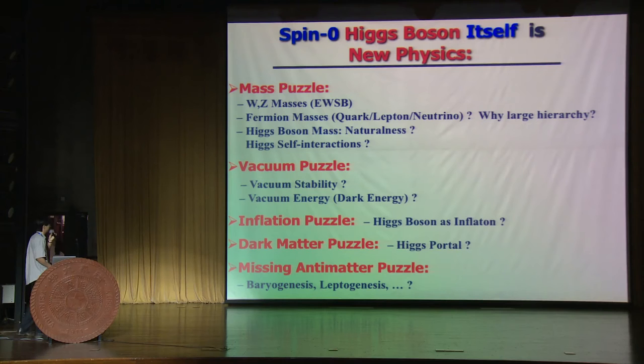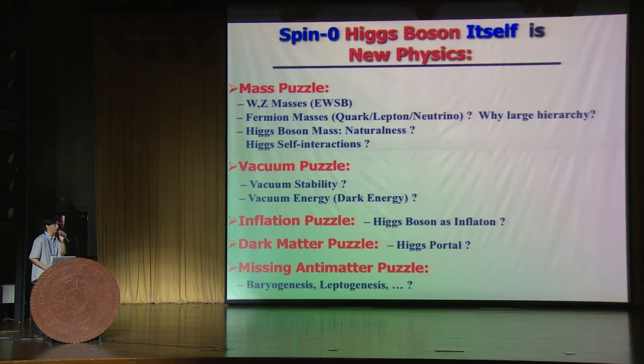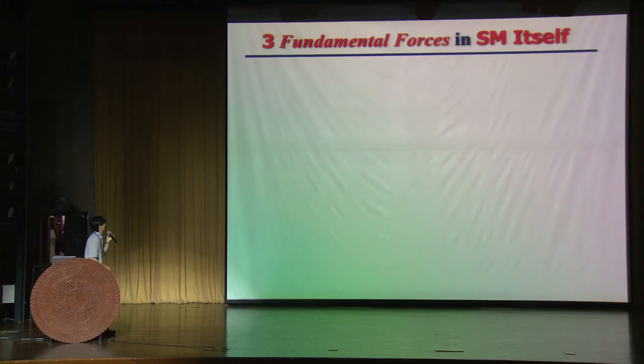Finally, we have the missing antimatter problem and baryon asymmetry, through possible realization of baryogenesis. Unfortunately, within the standard model, electroweak baryogenesis cannot be realized — it has to go beyond. There is also the possibility within neutrino mass generation, CP violation, leptogenesis, and so on.